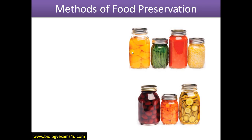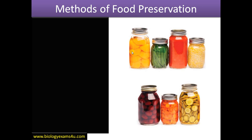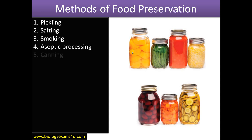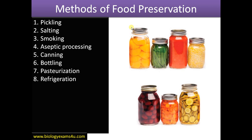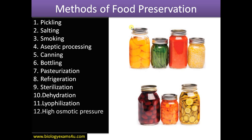Now we will list out and discuss the different methods of food preservation. The most common methods include pickling, salting, smoking, aseptic processing, canning, bottling, pasteurization, refrigeration, sterilization, dehydration, lyophilization, high osmotic pressure, chemical additives, and radiation irradiation. We'll have a quick look at each method in detail.